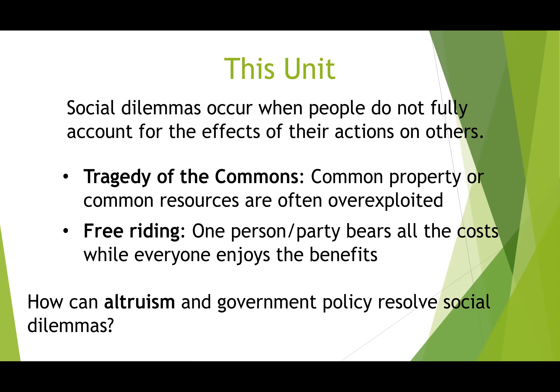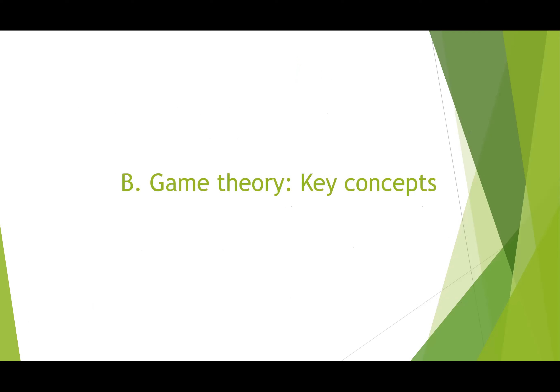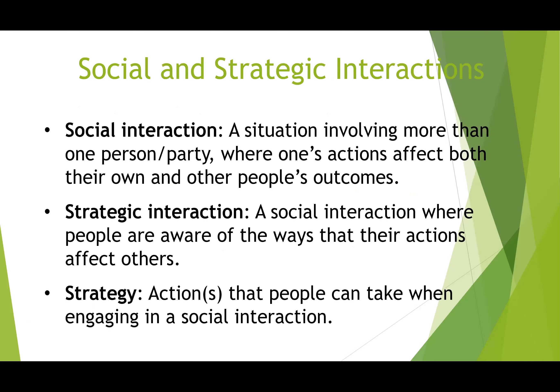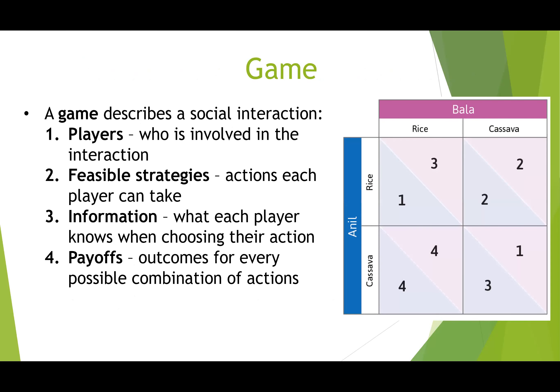Solutions include altruism and government policy — those are the two elements for resolving social dilemmas. But before that, we'll discuss key concepts without government policy. A social interaction involves more than one party where one's actions affect both their own and others' outcomes. A strategic interaction is where people are aware of how their actions affect others. A strategy is the action people can take when engaging in a social interaction.